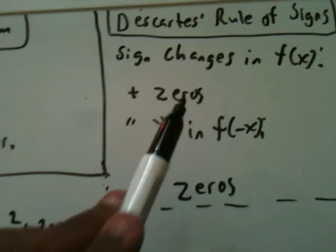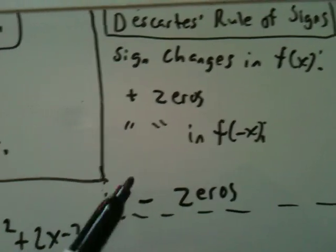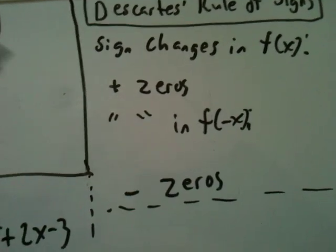For sign changes in f of minus x, that's the number of negative zeros. And again, you keep going down by 2.